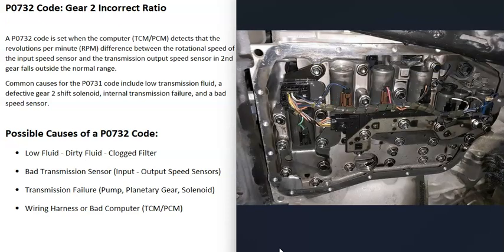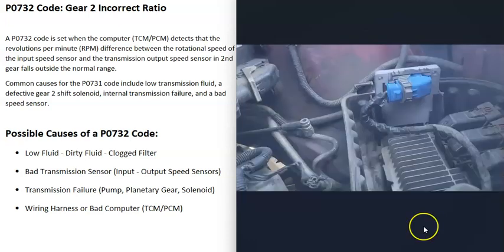The next thing that causes this is some kind of internal transmission failure, like a bad pump, a bad planetary gear, or the shift solenoid for second gear has gone bad, which is usually called shift solenoid B. If that solenoid goes bad, the transmission might not be able to shift into second gear correctly. The next thing on the list is going to be some kind of transmission failure.